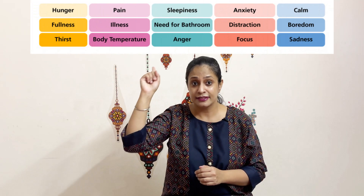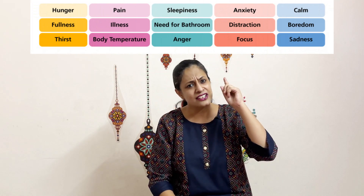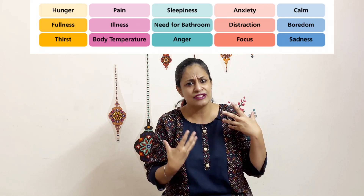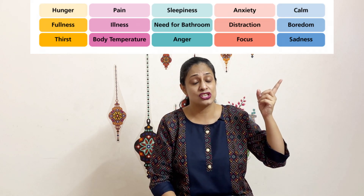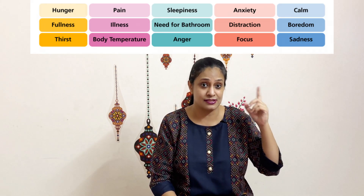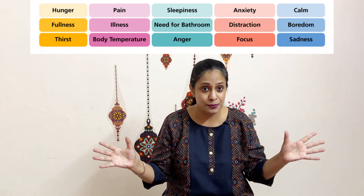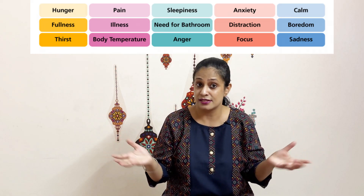Now we talk about the most important eighth system: interoception, or the awareness of internal body. The basic needs of the child is what we address in this system — needs like hunger, thirst, toileting, any kind of pain, any feeling of discomfort in the body, or whether the child is not well rested — sleep. All of these are associated with interoception.